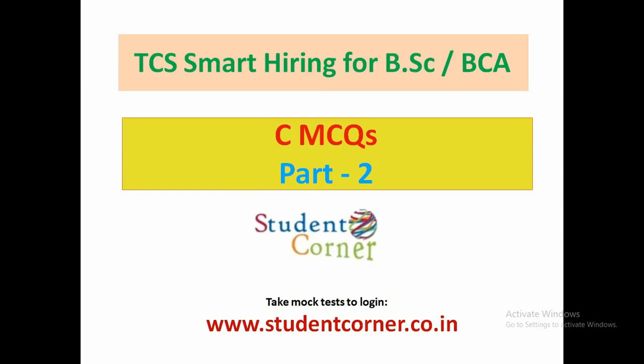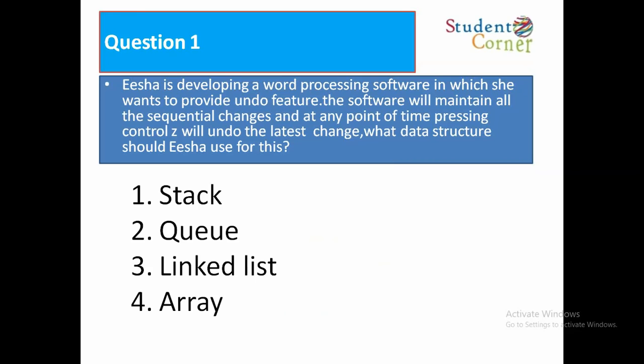Question 1: Isha is developing word processing software in which she wants to provide an undo feature. The software will maintain all sequential changes, and pressing Ctrl+Z will undo the latest change. What data structure should Isha use? Options: 1. Stack, 2. Queue, 3. Linked List, 4. Array. The answer is stack because undo means the last action will come back, and in a stack, what is stored last comes out first.